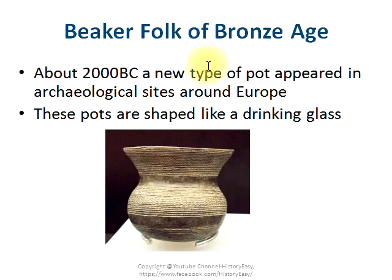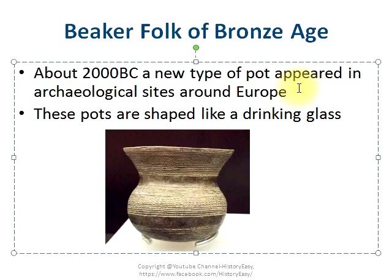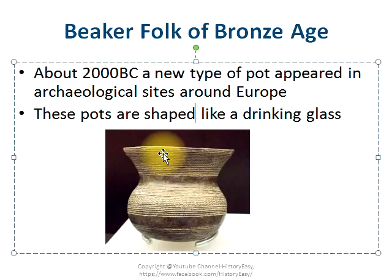The beaker of the Bronze Age, as shown in this diagram, dates to around 2000 BC, when a new type of pot appeared at archaeological sites around Europe. Carbon dating of these pots showed they were from around 2000 BC, and they were shaped like a drinking glass. This was one of the hallmarks and greatest developments of the Bronze Age — the new type of pot enabled better cooking, and new tools enabled better hunting and farming, leading to subsequent growth of humanity during the Bronze Age.